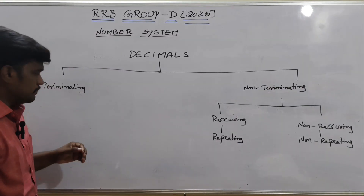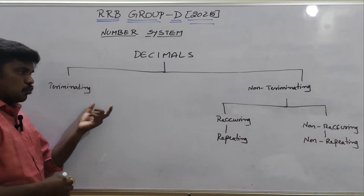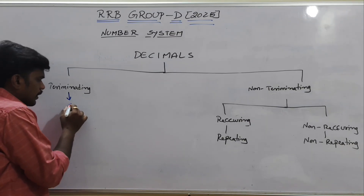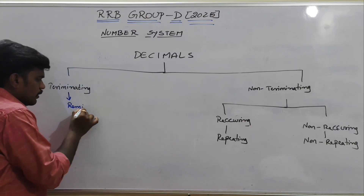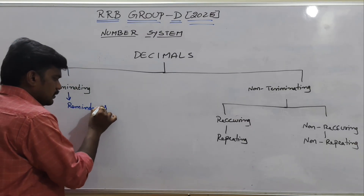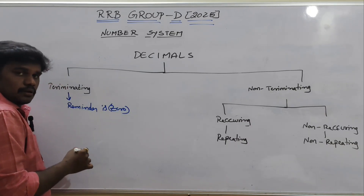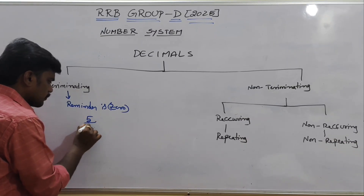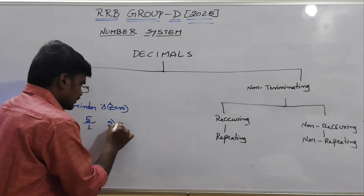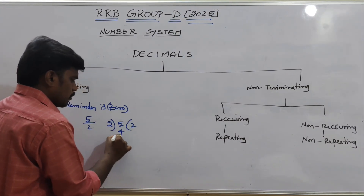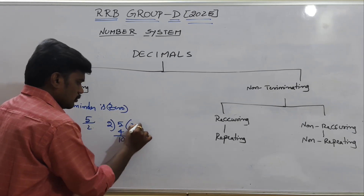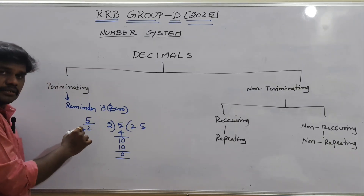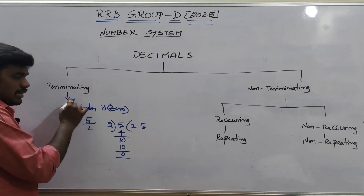Next topic is decimals. There are two types: terminating and non-terminating. Terminating means whenever the remainder is 0. For example, 5 by 2 — when you divide, 2 times 2 is 4, remainder 1; bring down to get 10, 2 times 5 is 10, remainder 0. This kind of number is called a terminating decimal.